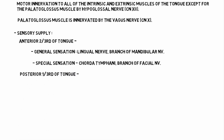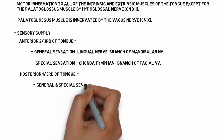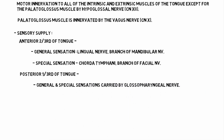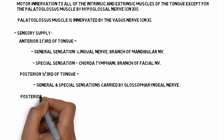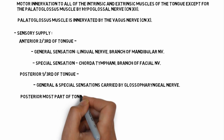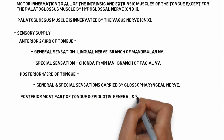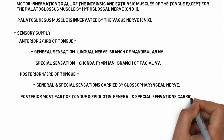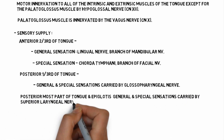The posterior one-third of the tongue — both general and special sensations — are carried by the glossopharyngeal nerve. Coming to the posterior-most part of the tongue and the epiglottis, both general and special sensations are carried by the superior laryngeal nerve.